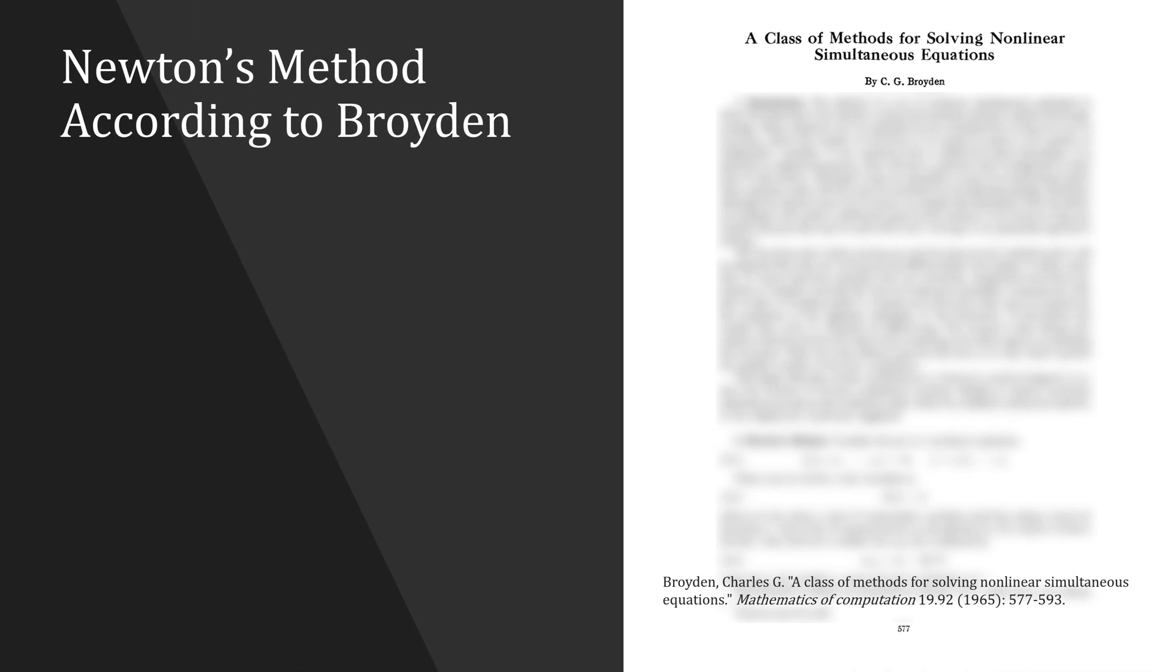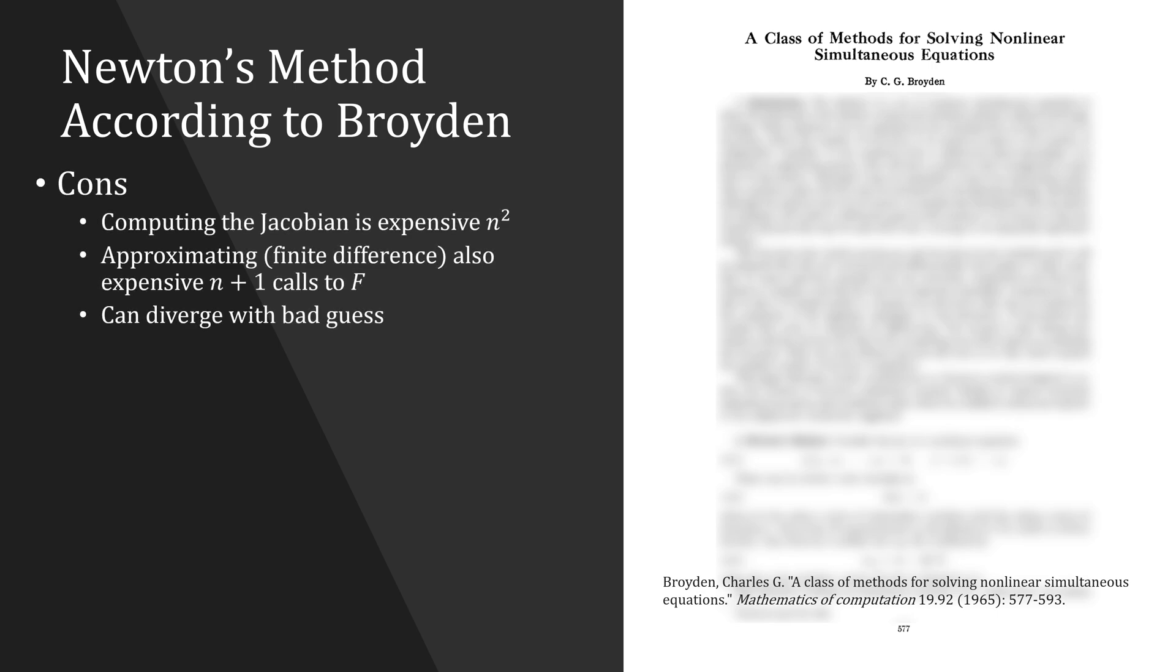In 1965, Broyden published a class of methods for solving nonlinear simultaneous equations, in which he tries to improve Newton's method. He notes some drawbacks of the method, mainly that the Jacobian is expensive to compute even if you try to use approximation and that it can diverge. But on the plus side, the algorithm is simple and its convergence is rapid. Furthermore, it has few competitors.